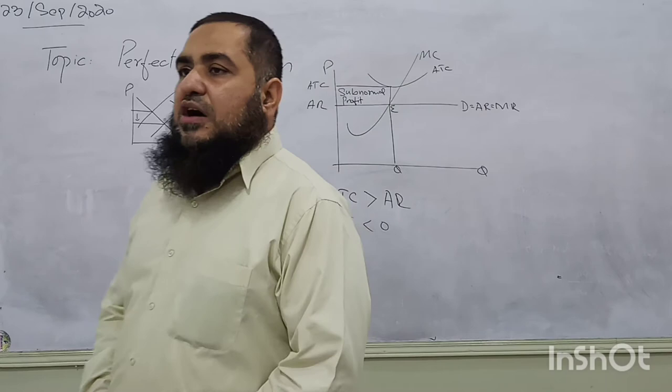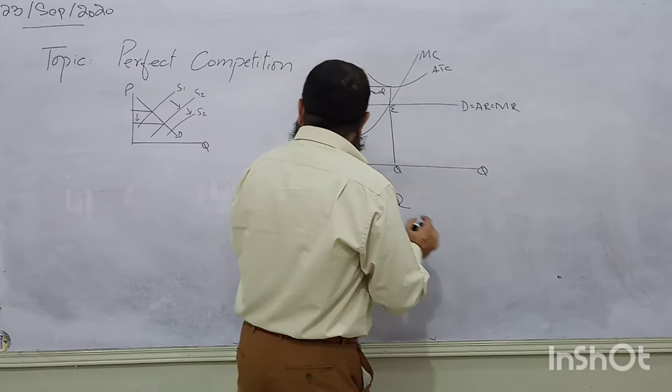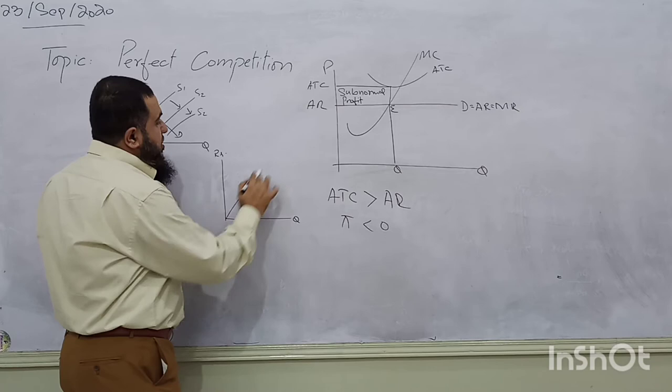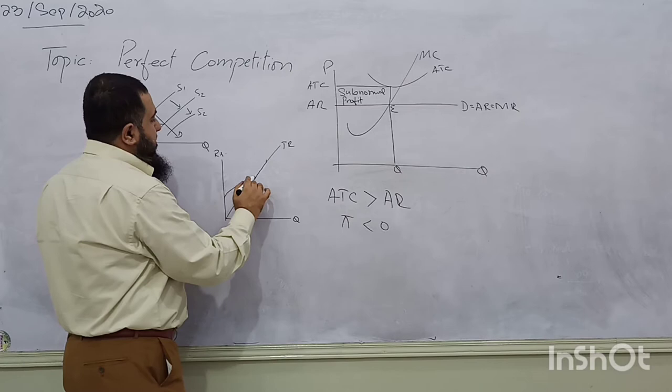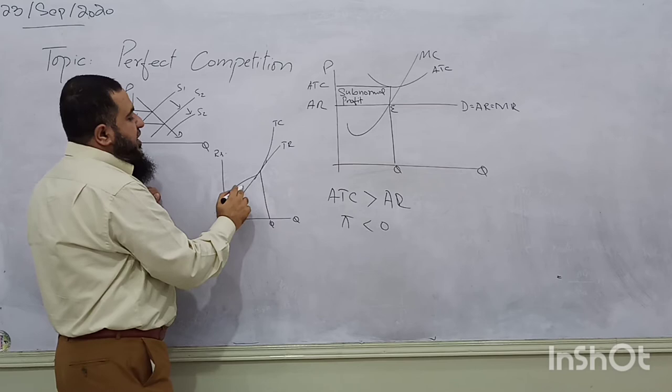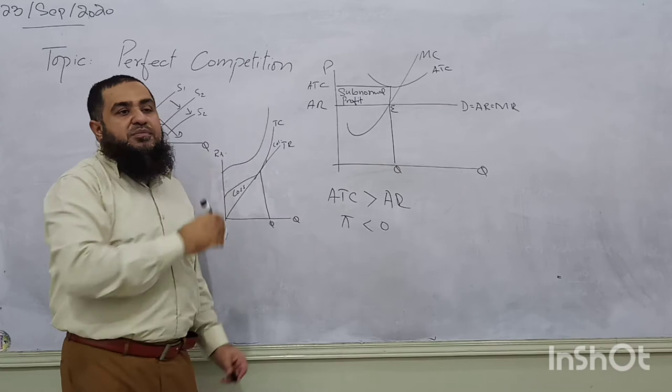I drew total revenue and total cost to show supernormal profit. To show normal profit using total revenue and total cost: the total cost curve will just be touching the total revenue curve. Before that point it carries a loss, after it carries a loss — the firm earns normal profit where total revenue equals total cost. And if total cost is lying above total revenue throughout, then it will be a subnormal profit.